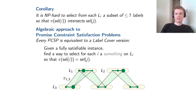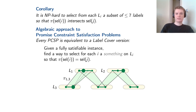With that example I can state the gist of the abstract algebraic approach to promise constraint satisfaction. The fundamental theorem is that every PCSP is equivalent to some version of label cover: given a fully satisfiable instance, find a way to select for each variable i a 'something' on L_i so that what you select for i agrees in some way with what you select for j.